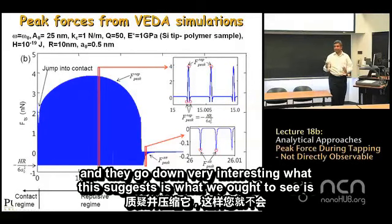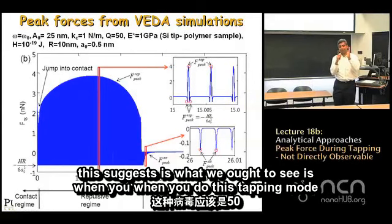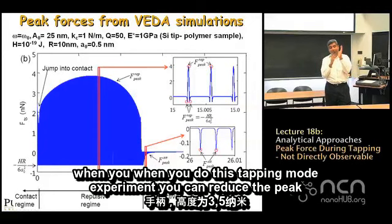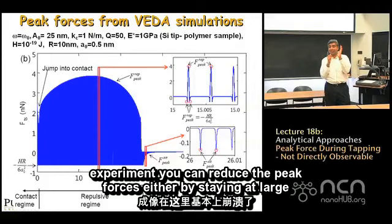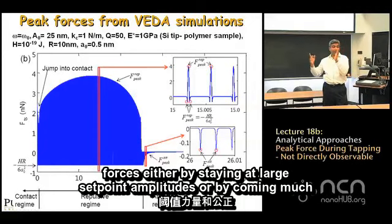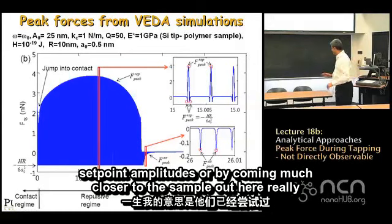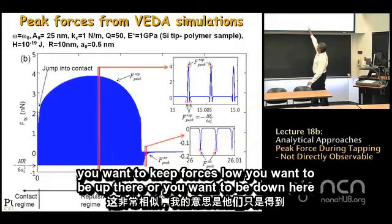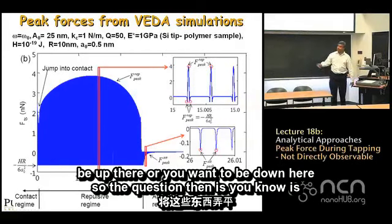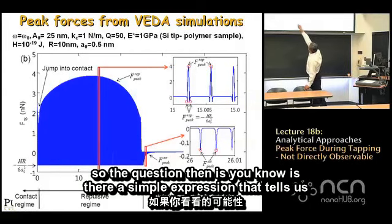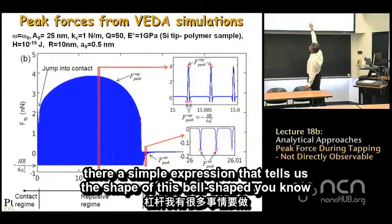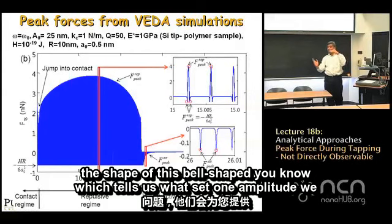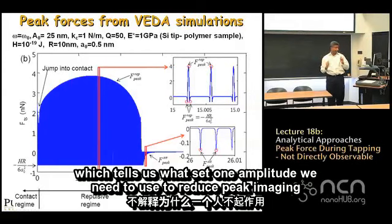This suggests that in tapping mode you can reduce peak forces either by staying at large set point amplitudes or by coming much closer to the sample and really reducing the amplitude. So if you want to keep forces low, you want to be at one extreme or the other. The question is: is there a simple expression describing this bell-shaped curve that tells us what set point amplitude to use to reduce peak imaging forces?